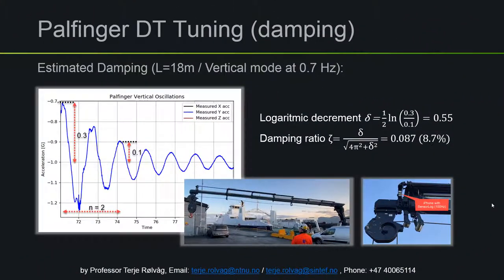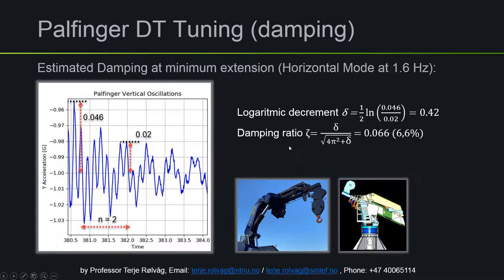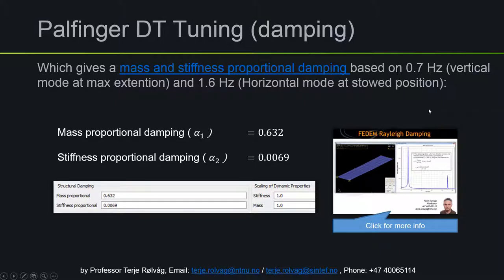Then we had to tune the damping of the crane model in extended and stowed positions. We used the same tests to calculate the logarithmic decrement and damping ratio for both positions. After that, we used mass and stiffness proportional damping in Fedem and tuned the alpha 1 and alpha 2 parameters, as shown in a separate video. In that way we could get a very precise description of the damping in the most extreme positions and in between.